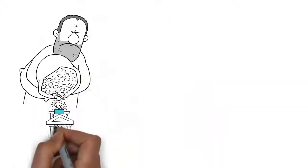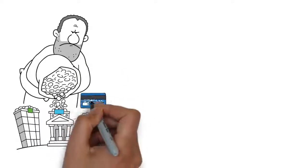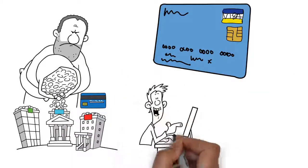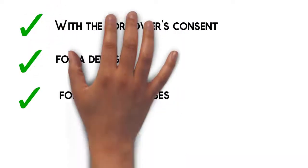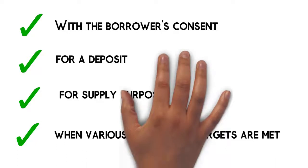The loan money is delivered to the contractor like a normal credit card payment via MasterCard rails, and the contractor can tap the funds with the borrower's consent for a deposit, for supply purposes, or when various completion targets are met.